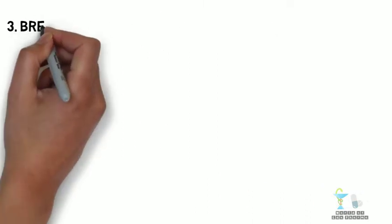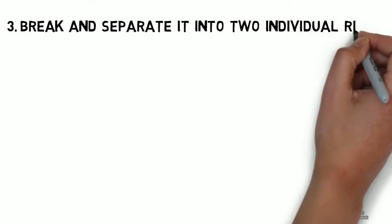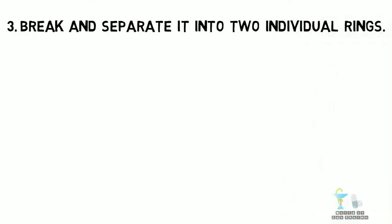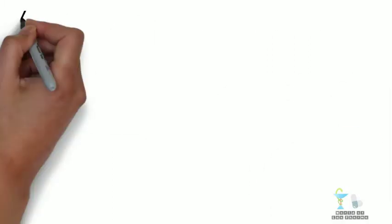After identifying the fused atoms, we have to break and separate it into two individual rings. While separating, share the bonds and atoms equally. After this step,